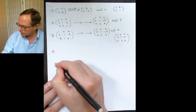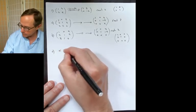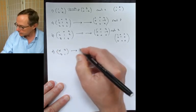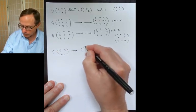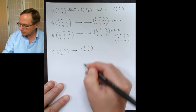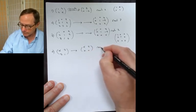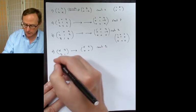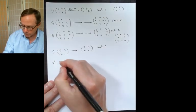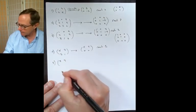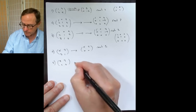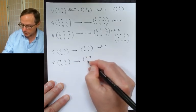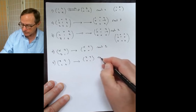Number four is [4, 2; 2, 1]. Gauss's method gives you [4, 2; 0, 0], so the rank there is one. And finally number five is [3, 3; 1, 2]. Gauss's method gives you [3, 3; 0, 1], so the rank is two.